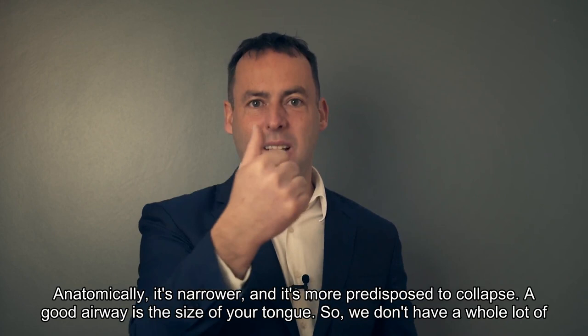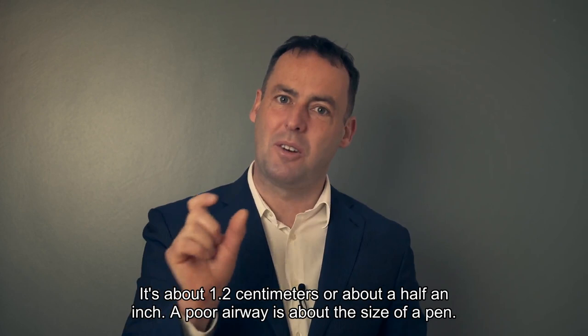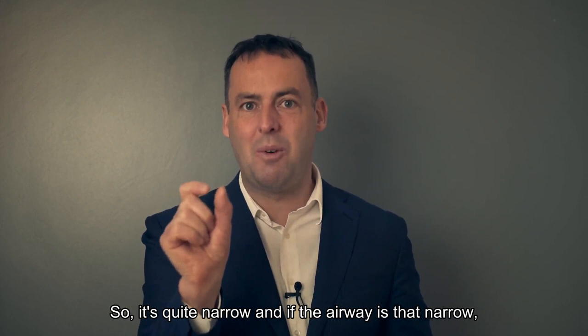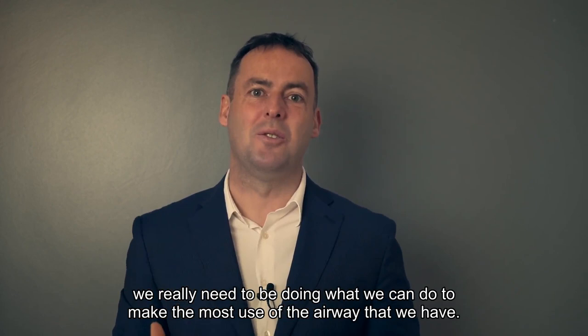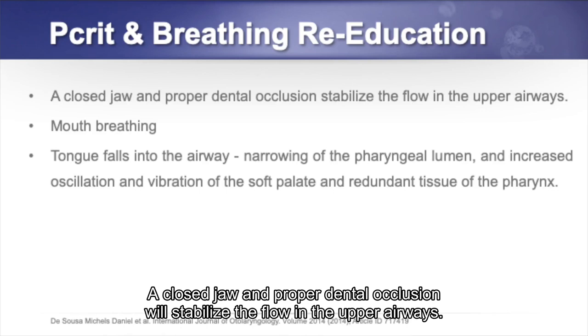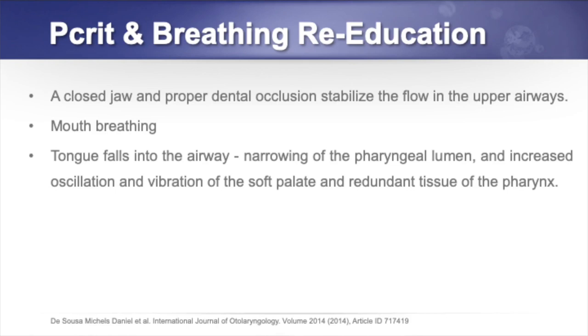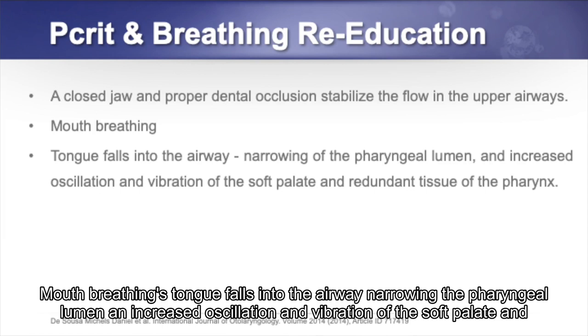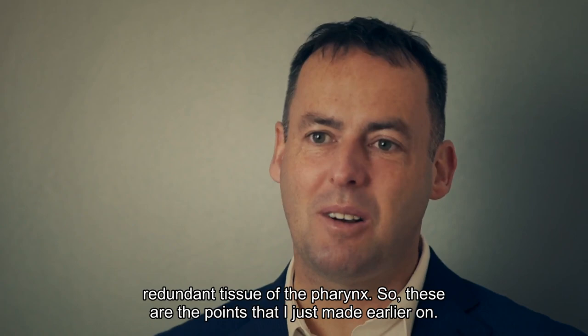A good airway is about the size of your tongue — roughly 1.2 centimeters or about half an inch. A poor airway is about the size of a pen, so if the airway is that narrow we need to make the most of it. A closed jaw and proper dental occlusion stabilize flow in the upper airways. With mouth breathing, the tongue falls into the airway, narrowing the pharyngeal lumen and increasing oscillation and vibration of the soft palate and redundant pharyngeal tissue.